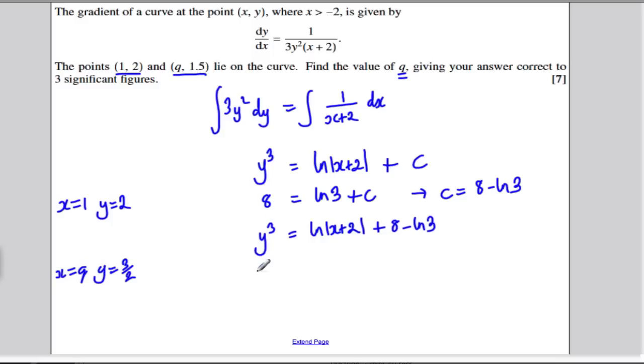So, 3 over 2 cubed is 27 over 8, is equal to ln q plus 2, plus 8, minus ln 3.